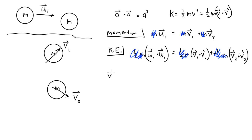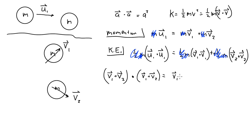Substituting u1 = v1 + v2, the left-hand side becomes (v1 + v2) dot (v1 + v2), and that is going to equal v1 dot v1 plus v2 dot v2 on the right-hand side.